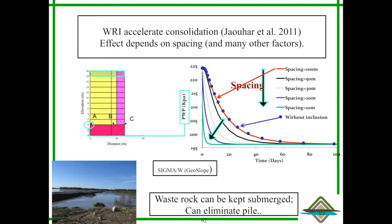Some of the modeling results, this has been published, shows the effect of the distance from the waste rock inclusion. Of course, if you're closer, you dissipate your excess pore water pressure. This is a layered system over 10 years with deposition according to layers. You have excess pore water pressure generated upon deposition, but this is dissipated.